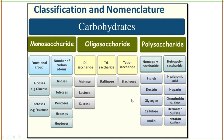We are going to see the classification and nomenclature of carbohydrates in a little more detail. Monosaccharides are divided by functional group: aldosis means aldehyde group — example glucose — and ketosis means ketone group — example fructose.